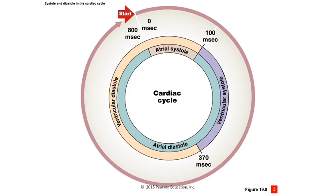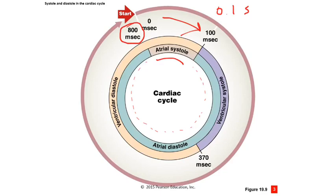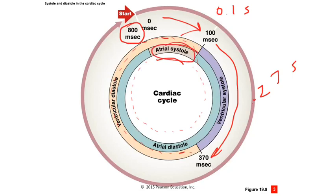The cardiac cycle can be shown with timing. The average complete cardiac cycle is 800 milliseconds. For the first 100 milliseconds (0.1 seconds), the atria are in systole, contracting. The rest of the time the atria are relaxed — they only contract for a short period out of the whole 0.8 seconds. The ventricles then contract for about 270 milliseconds (0.27 seconds), and then remain relaxed during the time the atria are contracting. The whole cycle is 0.8 seconds on average.